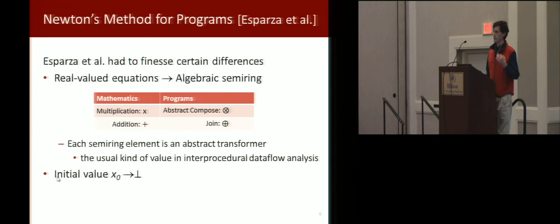To bring out the analogy, we'll use the semi-ring expression of data flow analysis problems. Basically the join operation is going to be written as a plus and a circle, and the composition operation will be written as a multiplication. But it's really just an abstraction of the composition of abstract transformers. This is the typical thing that you do in interprocedural data flow analysis.